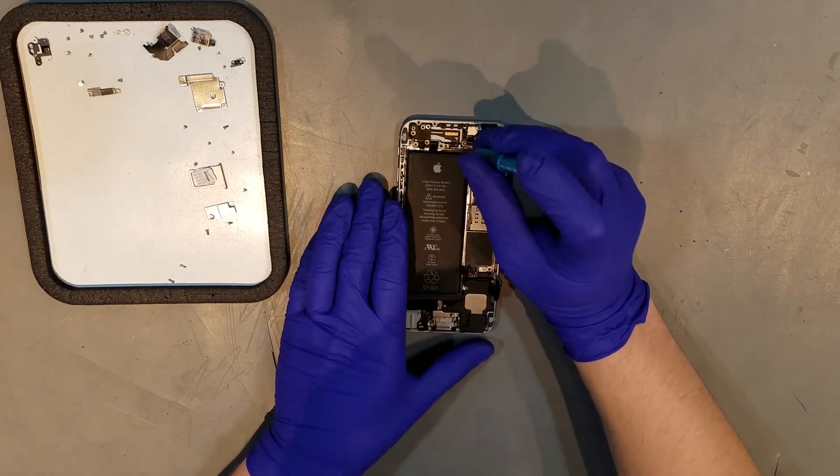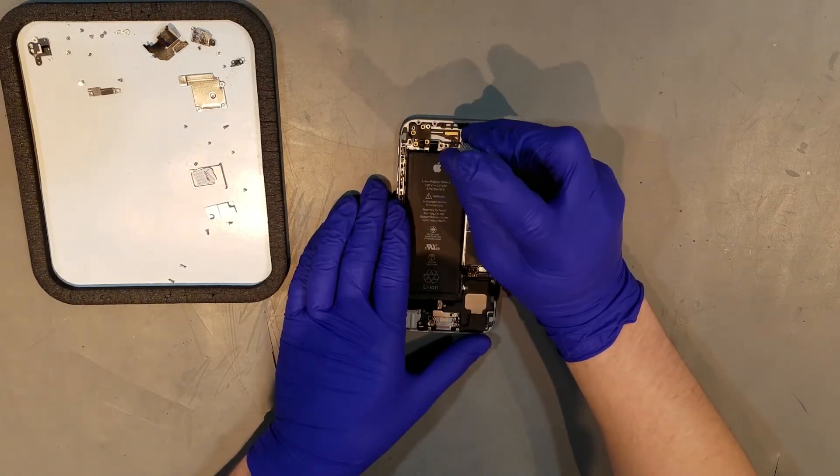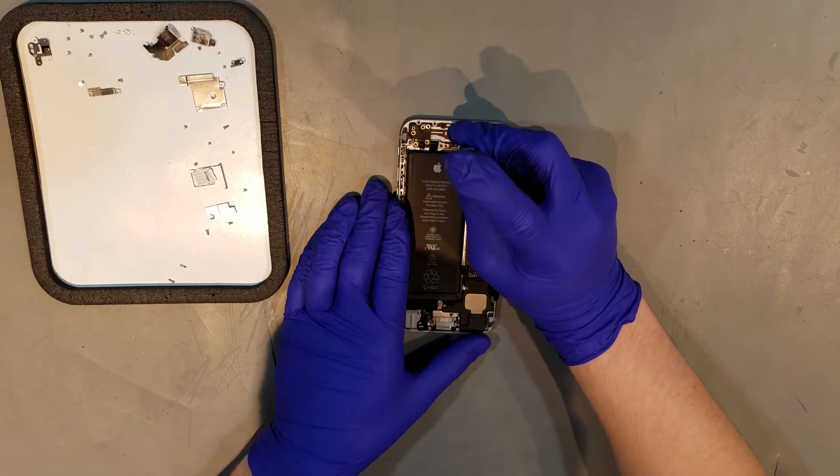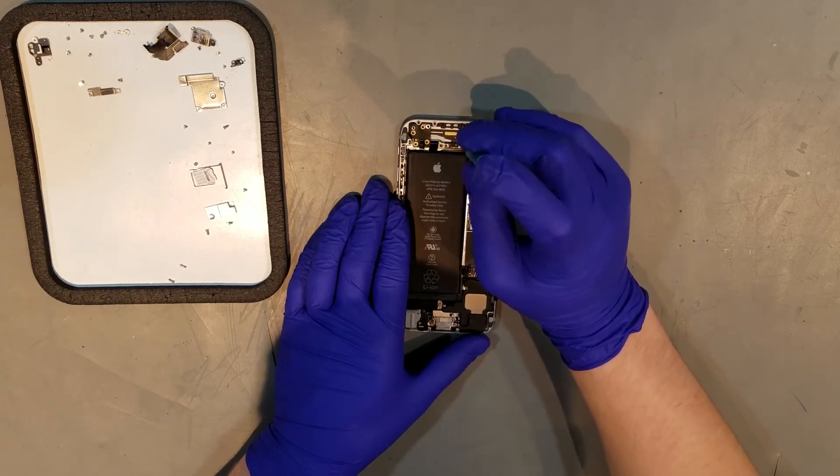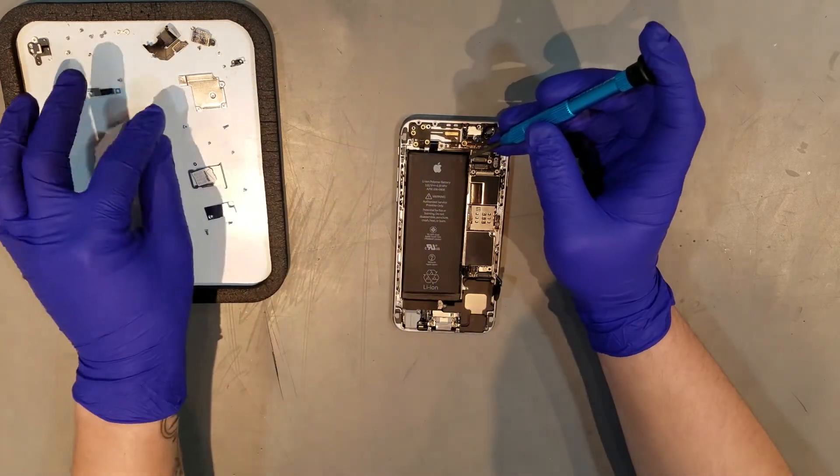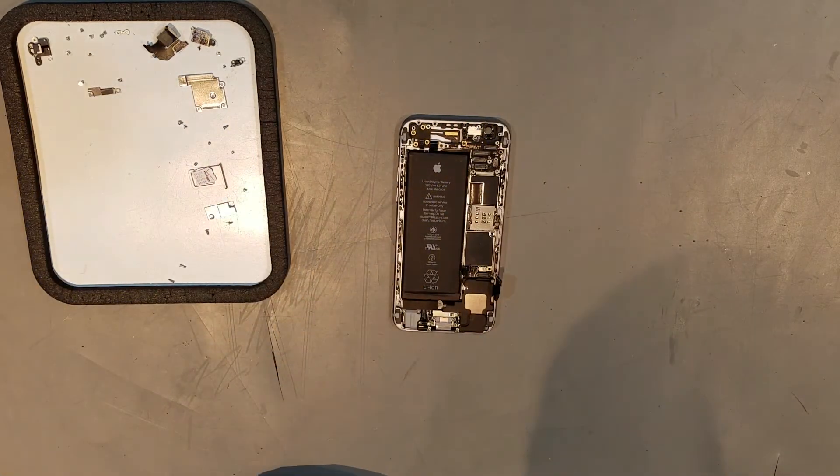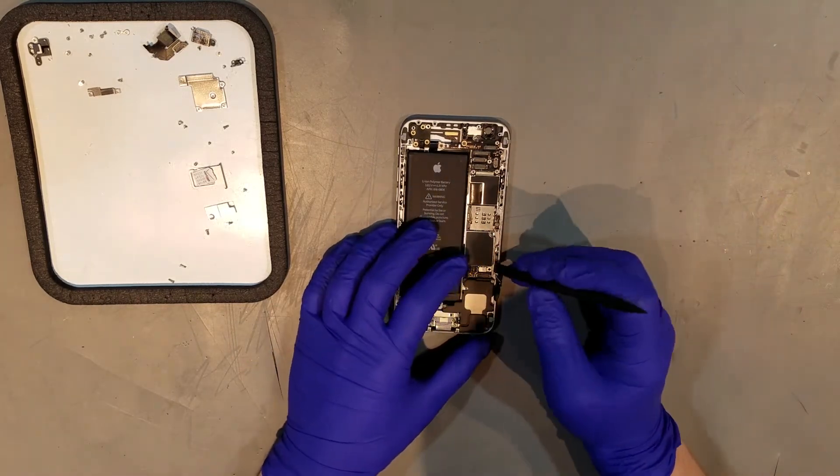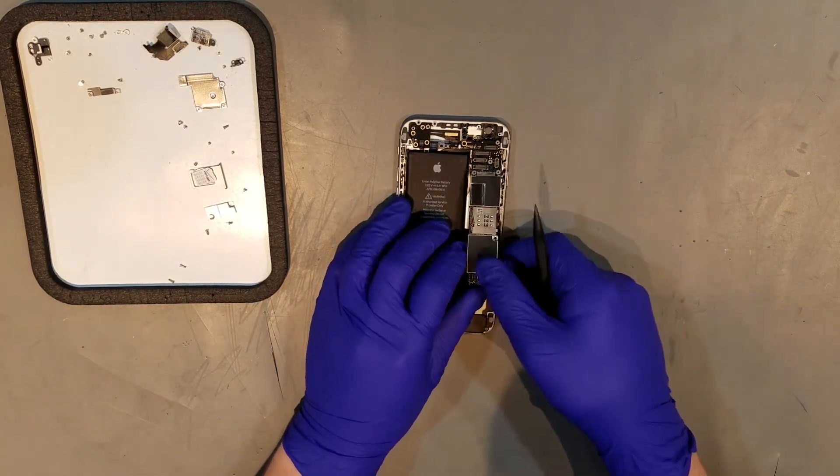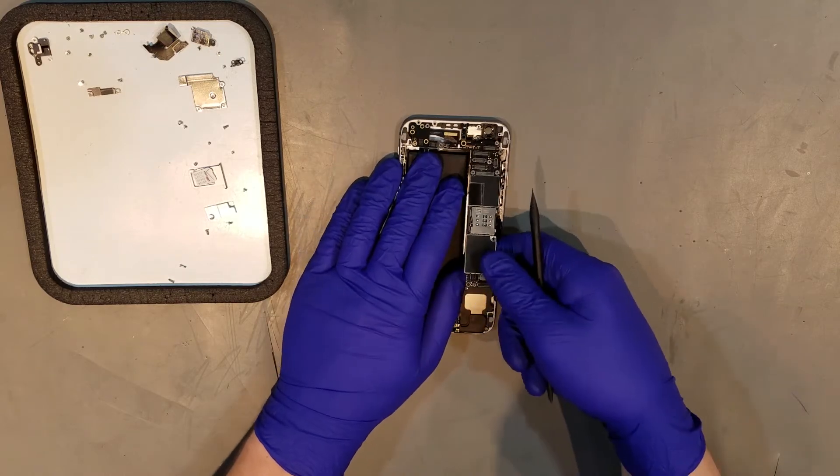The last screw holding the board in is a standoff located to the left of the connectors for the display assembly, which can be taken out with a flat head screwdriver. The logic board can then be lifted up carefully by grabbing it at the bottom and pulling downward slightly and then finally pulling it out completely.